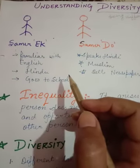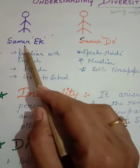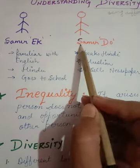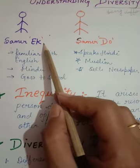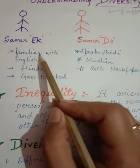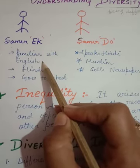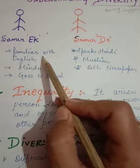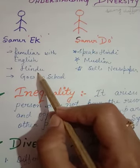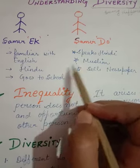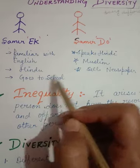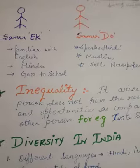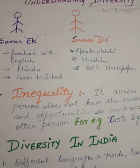In your book, a story is given about two boys whose names are similar: Sameer Ek and Sameer Do. Both have similar names but they do different kinds of work and belong to different religions. This illustrates diversity even among people who share the same name.